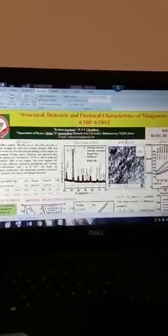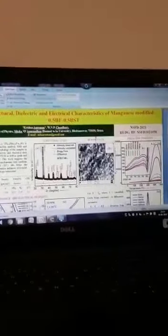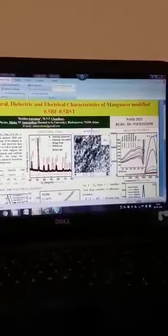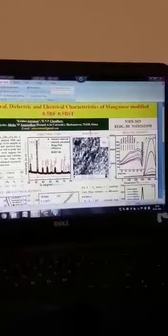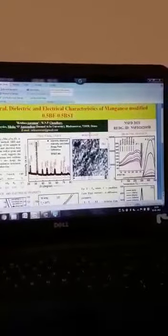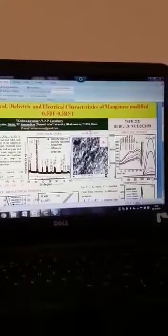This is the dielectric constant versus temperature graph. With increase in temperature, dielectric constant increases up to a certain value called the transition temperature or ferroelectric transition temperature. The Tc is at about 450 degrees centigrade.